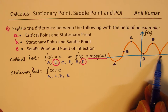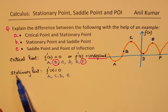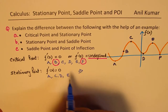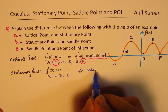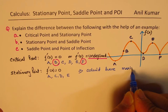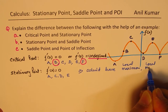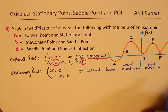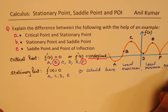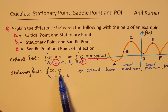F is not a stationary point since the derivative is not defined there. At a stationary point, we could have a local maximum, local minimum, or neither. It is not necessary that once the first derivative is zero, you will always have a local maximum or minimum — it could be neither also.